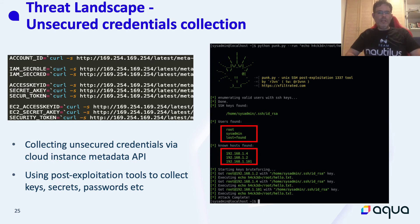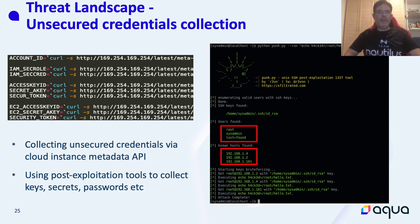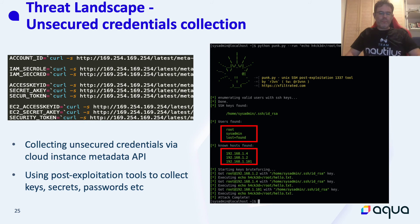To collect unsecured credentials, attackers are using scripts to query cloud metadata for the specific instance and trying to collect IAM roles, secrets, and access keys. Another example is using scripts to collect keys, secrets, and passwords. In one specific example, the script found three users — root and sysadmin — along with three known hosts and SSH keys related to them. After collecting this data, the attacker can perform lateral movement to these hosts and possibly do more damage.